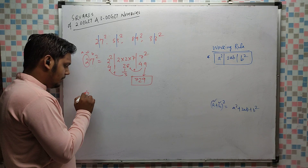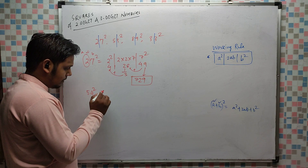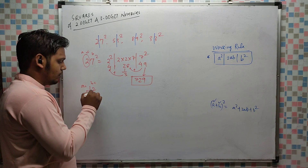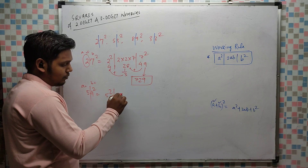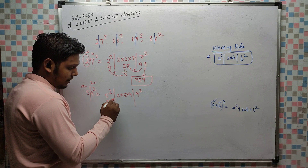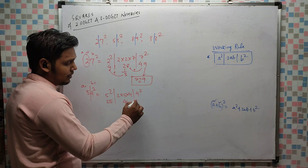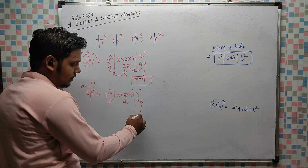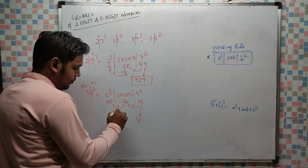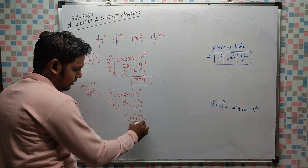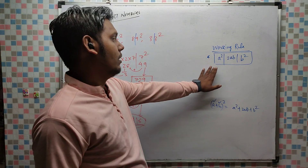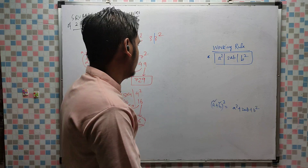Now suppose 54². Split into a = 5, b = 4. So: 5² = 25, 2×5×4 = 40, 4² = 16. Balance: drop 6, 1 adds with 0 giving 1, then 4 adds with 0 giving 4, then 4 adds with 25 giving 29. Answer is 2916.